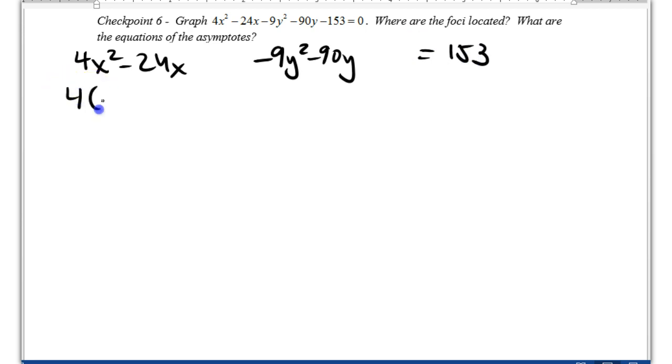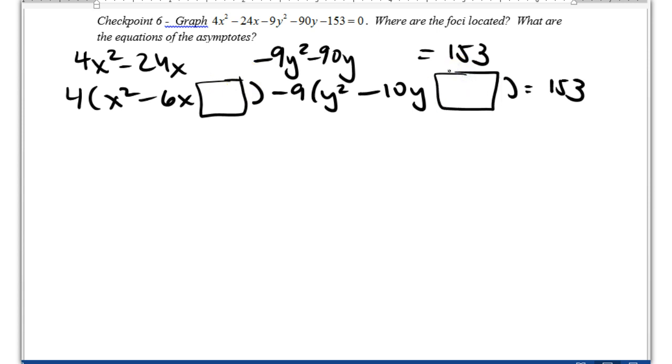Now I'm going to factor out the leading coefficients here and leave a blank. Okay, now my goal is to fill in these spaces here and here with the number that will create a perfect square trinomial.